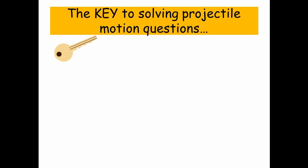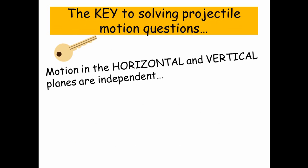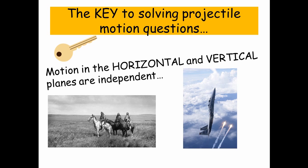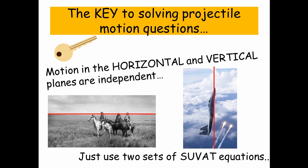The key to solving projectile motion questions is that the motion in the horizontal and vertical planes are completely independent. So you need to think completely horizontally and vertically, both at the same time. And we're going to use two sets of SUVAT equations to solve these problems.